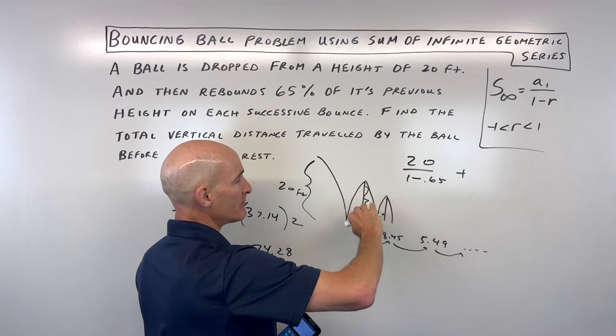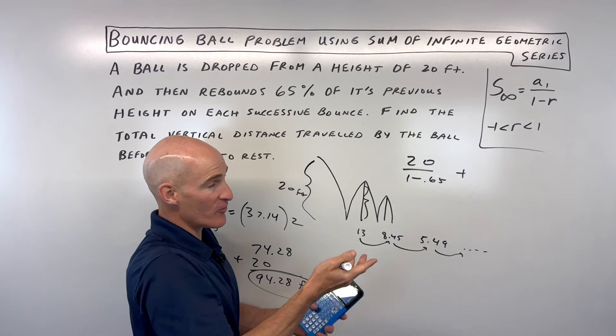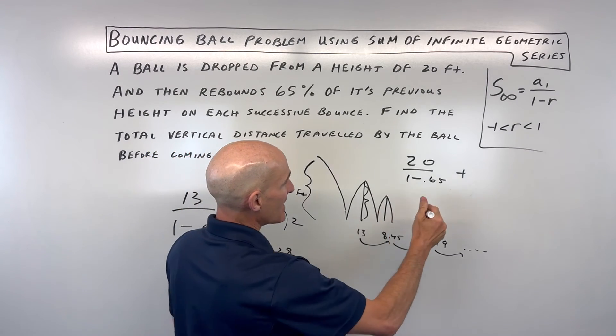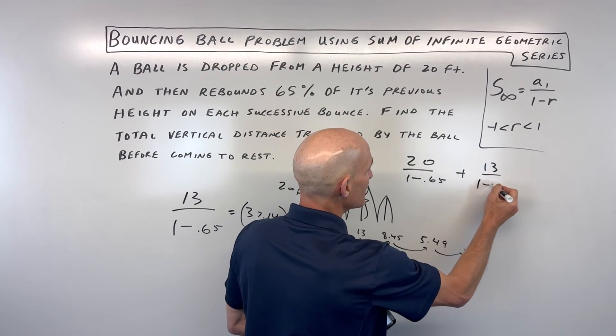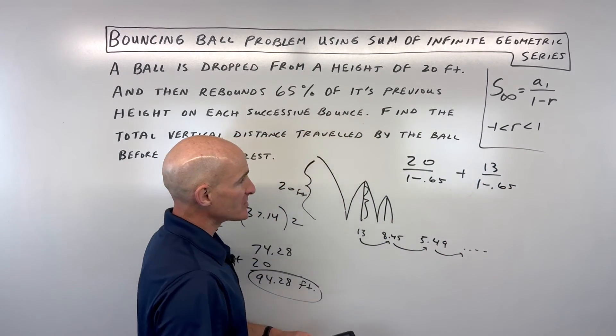Then we're going to do one for all on the up, going upwards directions. That's going to be, the first term would be 13, and we can add those together.